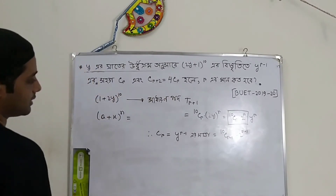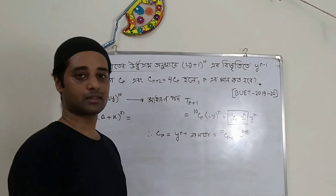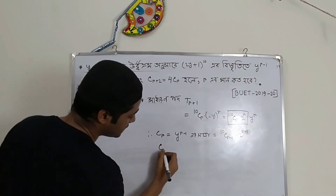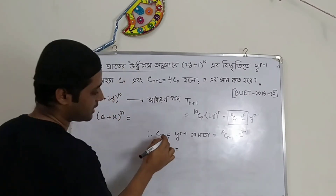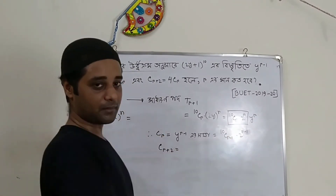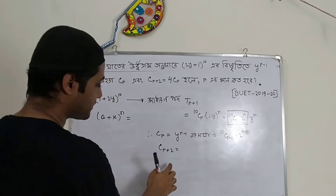Now, Cr plus 2 is the r minus 1. We have R plus 2 as a condition.